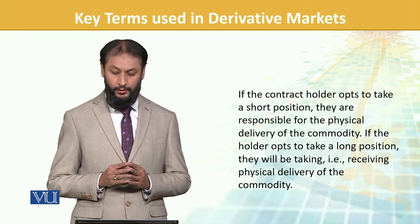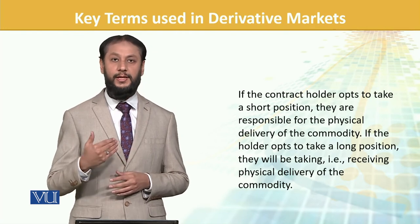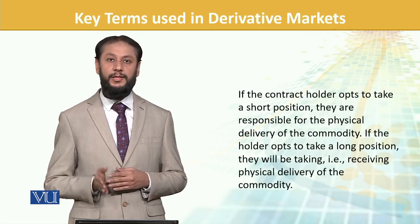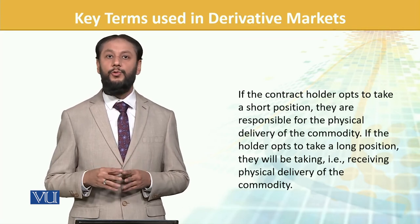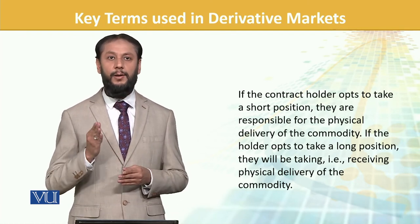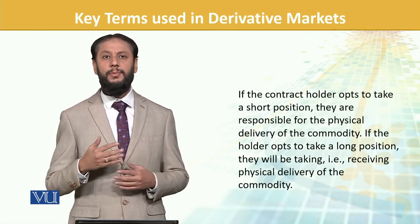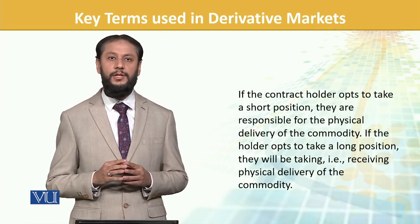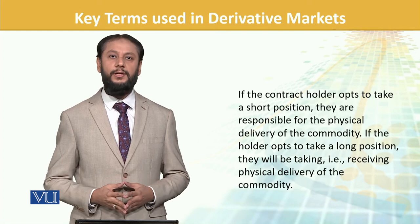If the contract holders opt to take a short position, they are responsible for physical delivery. If a short position is not on the sell side, then those who are long — the owners — will provide the product. Some people just enter contracts with no commodities at that time. At the time of settlement, they have to arrange the commodity and provide it to the long party with whom the buy agreement was made. These are multiple terms that are frequently used and we should have a basic thorough understanding of these, because they are the bottom line of any derivative contract.